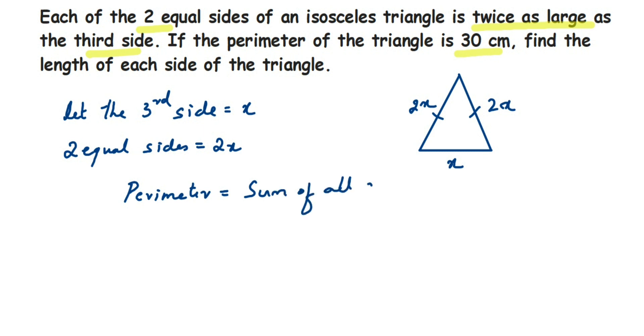So perimeter is equal to sum of all sides. So we are going to add all the sides here. I am going to substitute the value of perimeter. It is given 30. So 30 is equal to, add all the sides. So it will be 2x plus 2x plus x. So when you add them, you will get 5x. So 30 is equal to 5x.